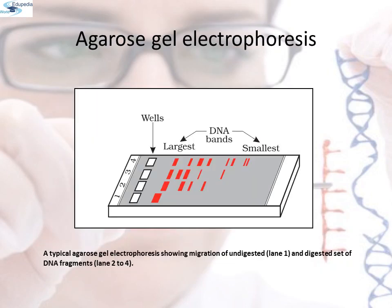Here is a diagrammatic representation of agarose gel electrophoresis, showing a typical gel with migration of undigested DNA in lane 1 and digested sets of DNA fragments from lanes 2 to 4.